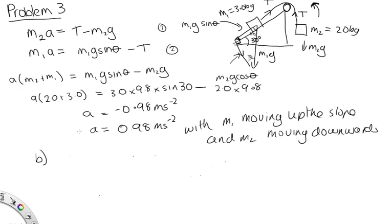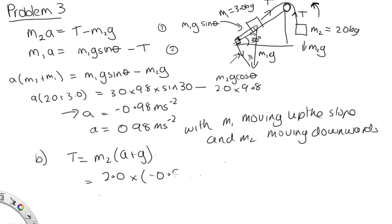Part B asks us to find the tension in the chord. We can solve either equation, but we need to use A = −0.98 m/s² as derived (since we assumed the wrong direction). Using equation 1: T = M2(A + g) = 2.0 × (−0.98 + 9.8) = 2.0 × 8.82 = 17.64, which is approximately 18 newtons.